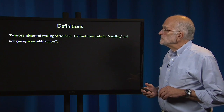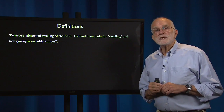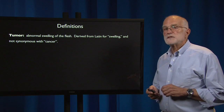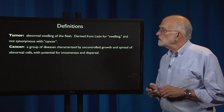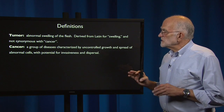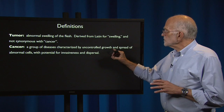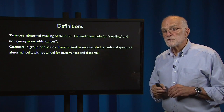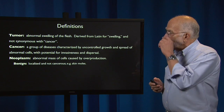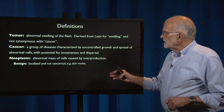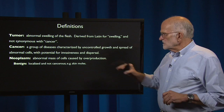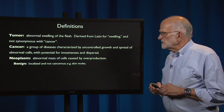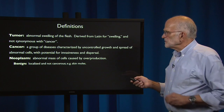First, definitions. A tumor is any abnormal swelling of the flesh — it's derived from the Latin for swelling — and it is not synonymous with cancer. Cancer is a group of diseases characterized by uncontrolled growth and spread of abnormal cells, with the potential for invading and dispersing. A neoplasm is an abnormal mass of cells caused by overproduction, and a benign neoplasm is localized and not cancerous — for example, skin moles.